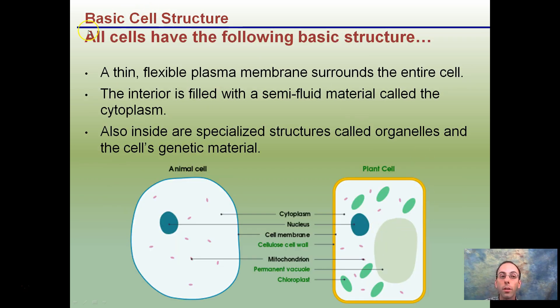Basic structure of cells. All cells have this same basic structure. Keep in mind there's animal cells and plant cells, but basic structure is this flexible plasma membrane that surrounds the entire cell and it's in both animal and also plant cells.